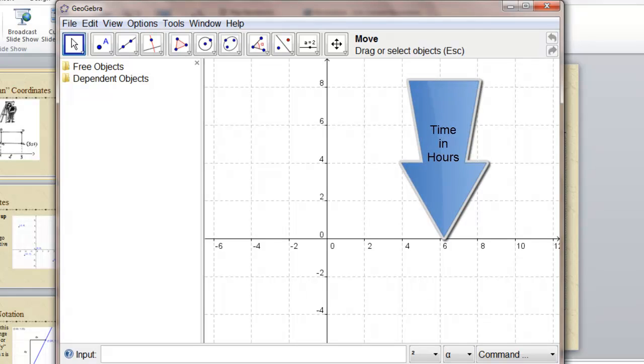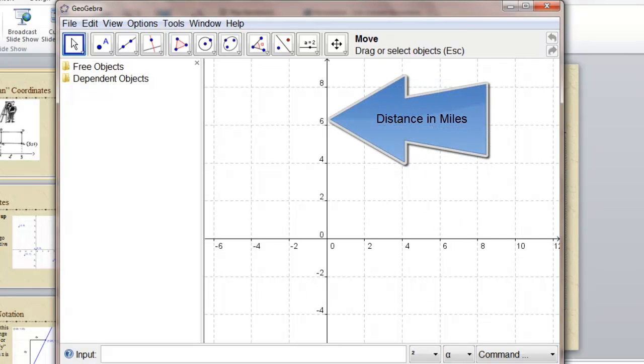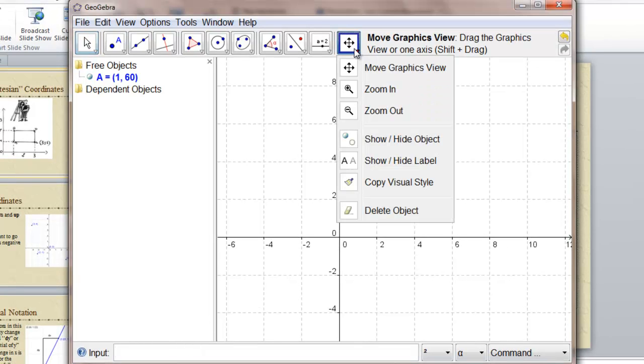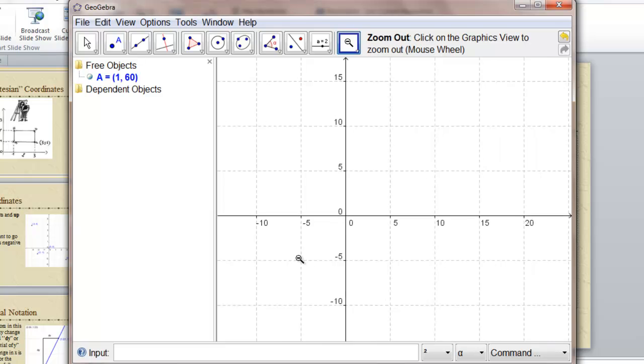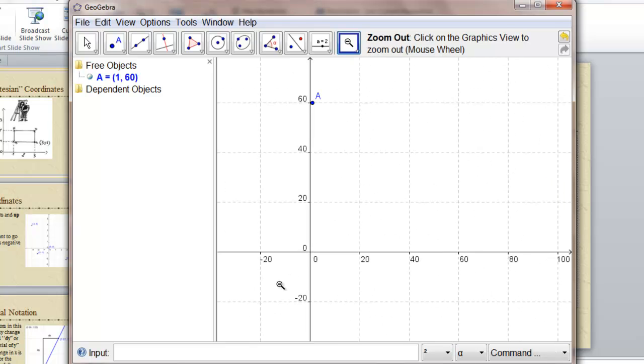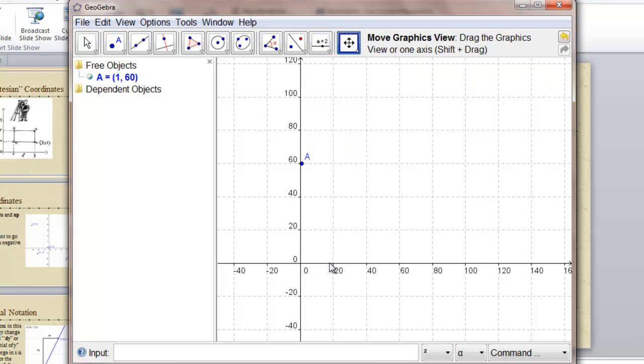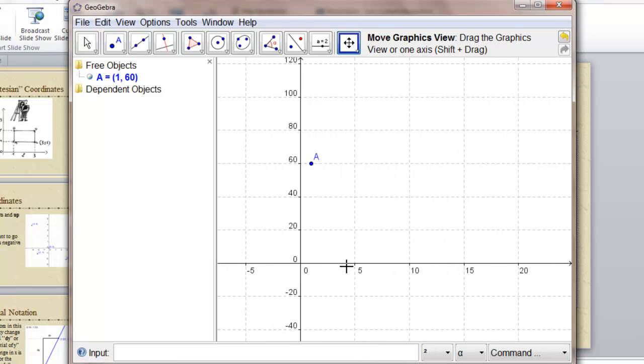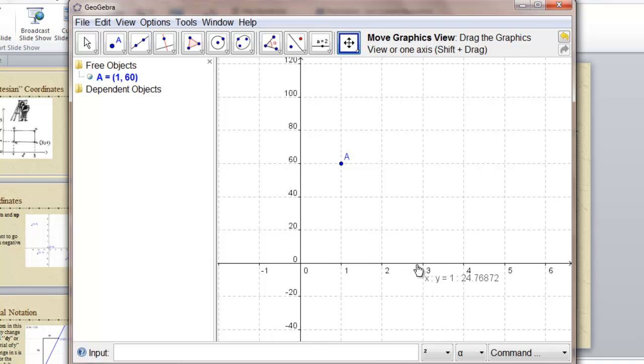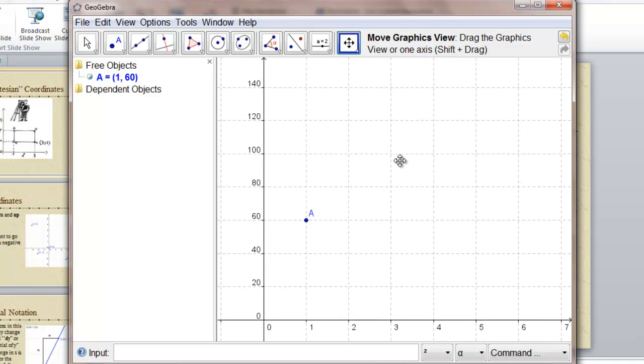We'll graph the distance a car gets under constant velocity. The horizontal axis will be the time in hours and the vertical axis will be the distance in miles. So if we drive at 60 miles per hour, how far do we get in one hour? 60 miles. So we'll graph the point (1,60). We have to zoom out in order to see that. We can also move one of the axes and we can move the whole view.